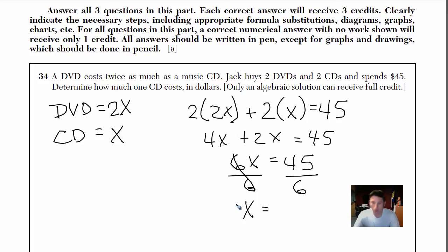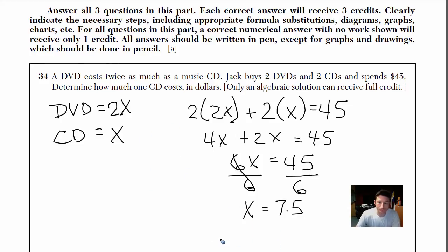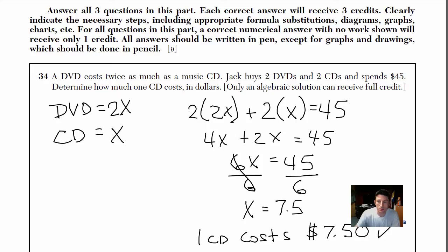Got my calculator here — 45 divided by 6 gives us 7.5. So X equals 7.5, and since X represents one CD, one CD costs $7.50. We're all done — easy as that.